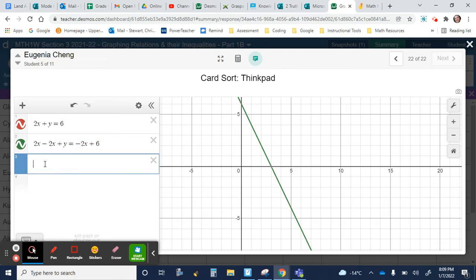So, last but not least, I'll add one more expression. And given that this is a zero pair, we are left with y equals negative 2x plus 6.